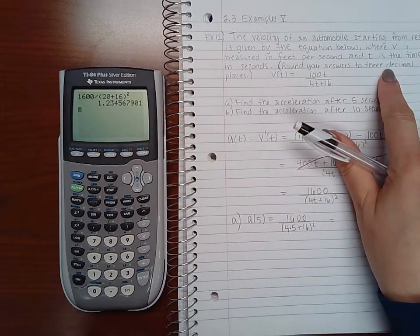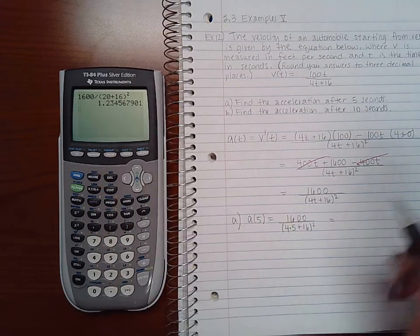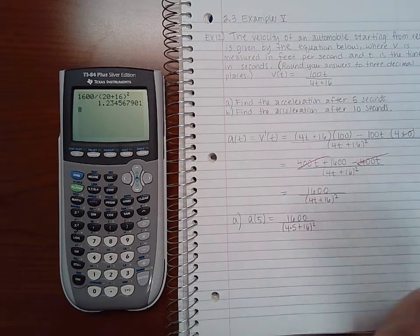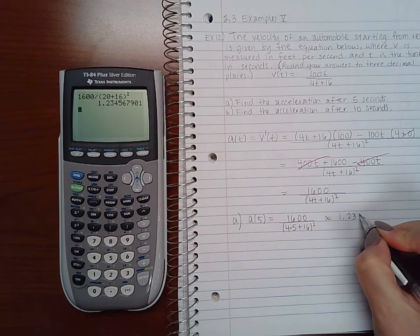And it says round the answers to three decimal places. So 1, 2, 3, that 5 will cause it to round up, making this 1.235.